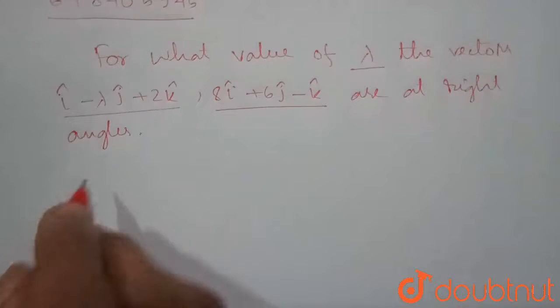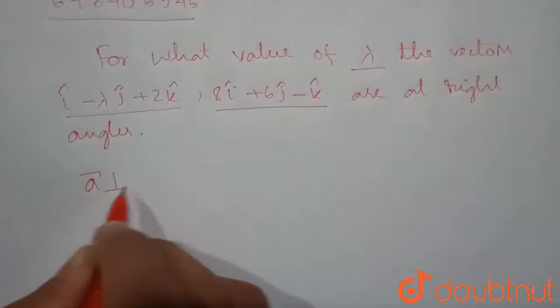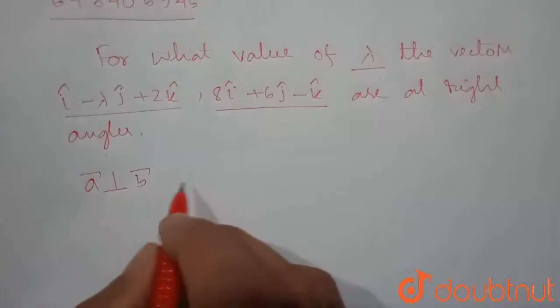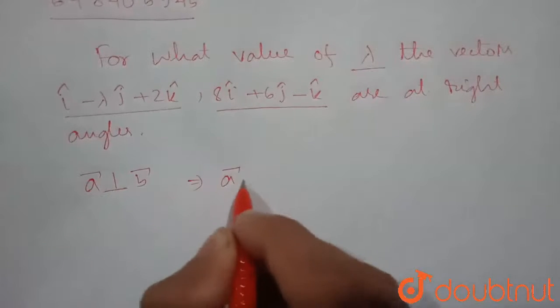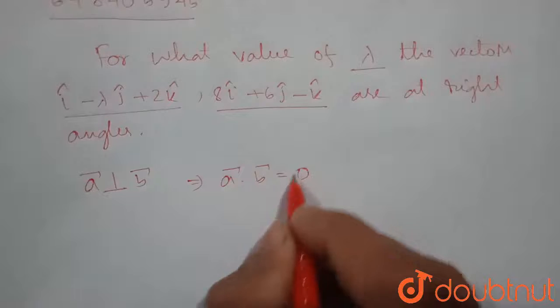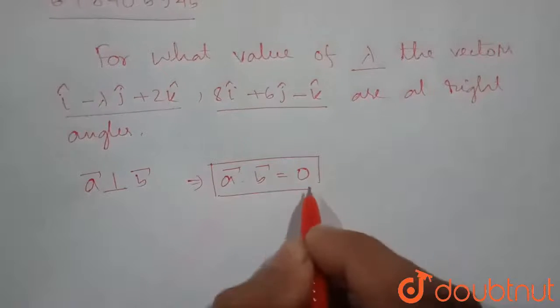So we know one thing if a vector is perpendicular to the vector, we can write a dot b is equal to 0. So we know this thing.